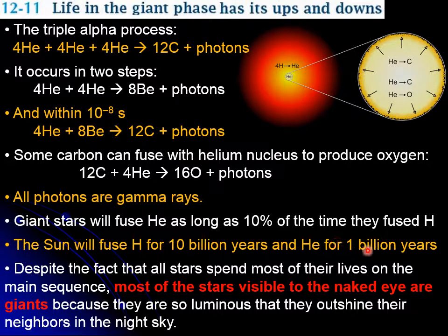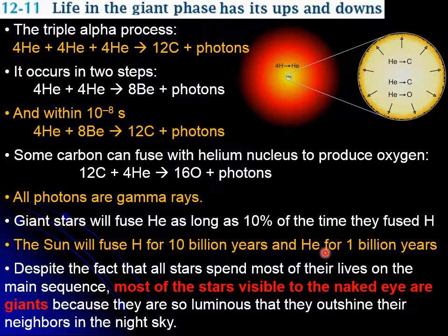In spite of the fact that the helium fusion stage of a star lasts about one-tenth of the hydrogen fusion stage, when we look up with our telescopes we see more stars that are fusing helium than hydrogen-fusing stars. This is because the luminosity of helium-fusing giants is much larger — these are giants, whereas hydrogen-fusing stars are main sequence stars.